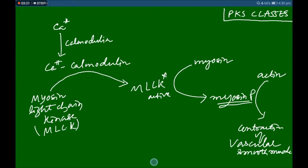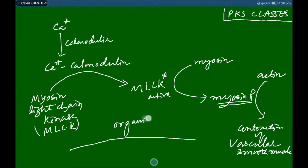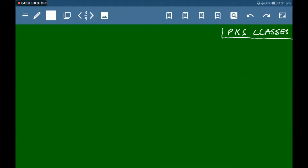If we want vasodilation or relaxation of vascular smooth muscle, we have to inhibit this pathway, and this can be done by nitrates. Organic nitrates activate guanylate cyclase, leading to formation of cyclic GMP, which inhibits the activation of MLCK.